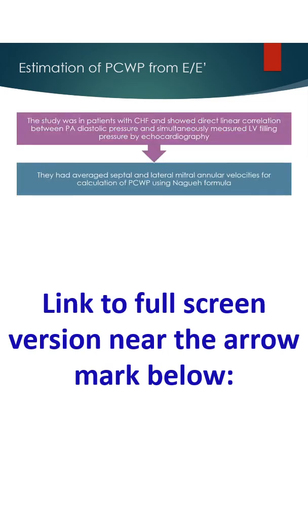The study was in patients with congestive heart failure and showed direct linear correlation between pulmonary artery diastolic pressure and simultaneously measured left ventricular filling pressure by echocardiography. They had averaged septal and lateral mitral annular velocities for calculation of PCWP using Nagueh formula.